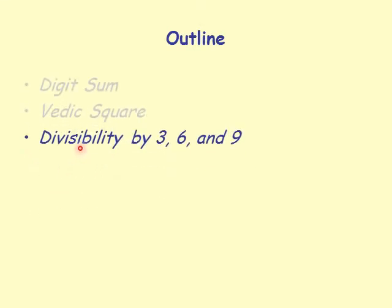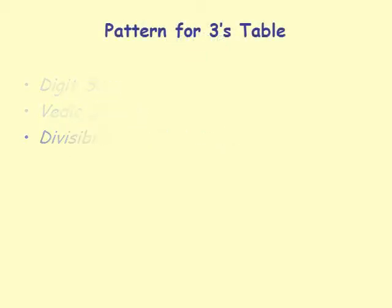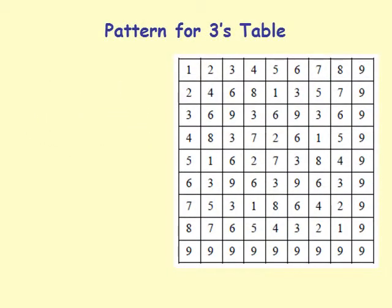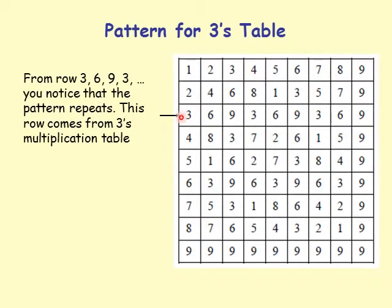We'll now discuss divisibility rules by 3, 6, and 9 using the Vedic square. Looking at the pattern for the 3's table row, it has numbers 3, 6, 9, 3, 6, 9 — repeating. This row came from the multiplication table for 3's. That means a digit sum of 3, 6, or 9 means the number is divisible by 3.